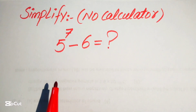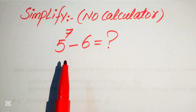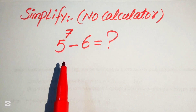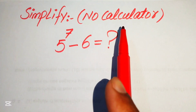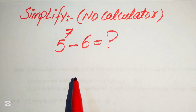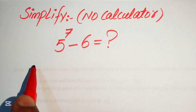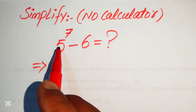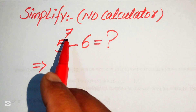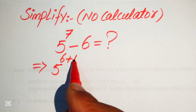Hello everyone. How to simplify this nice algebraic expression: 5 to the power of 7 minus 6. We write this in the lowest form, but remember that a calculator is not allowed in this problem, which means we show all of the working on paper. The very first step is to focus on the exponent of this term. The exponent is 7, so we write 7 as 6 plus 1.